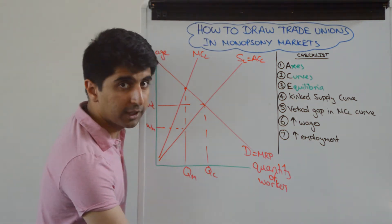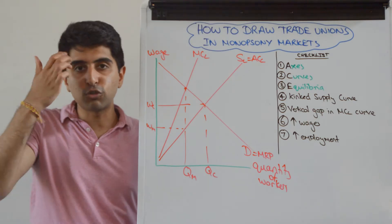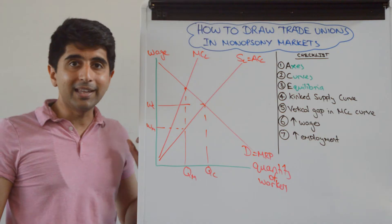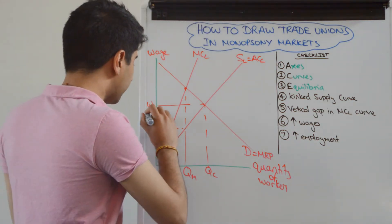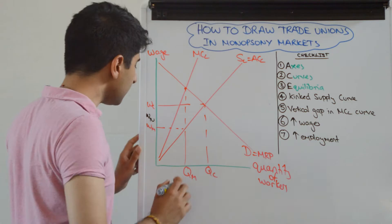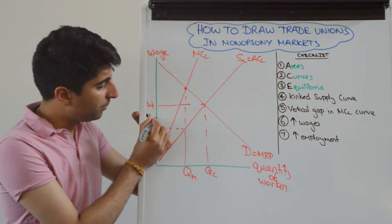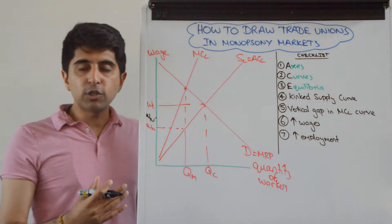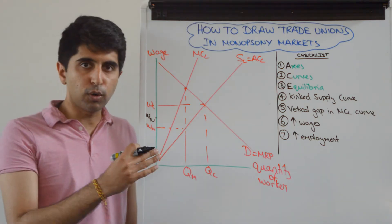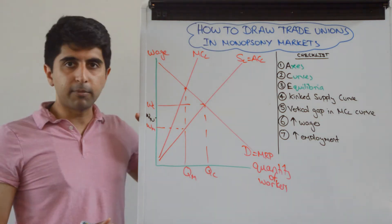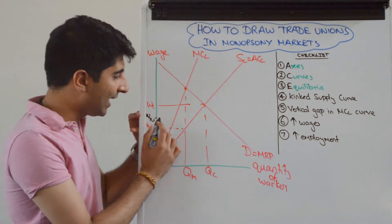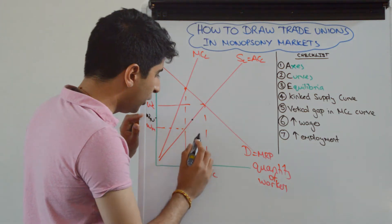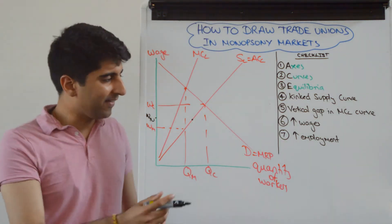Now we want to add in the impact of a trade union. A trade union will bargain for a wage higher than the monopsony wage, so put that on your diagram. I call that wage WTU — place it in between WM and WC. At that wage rate there is a limit to the number of workers willing to work, and that limit can be found on the original supply curve. Go across and draw that dot in — that limit is really important.